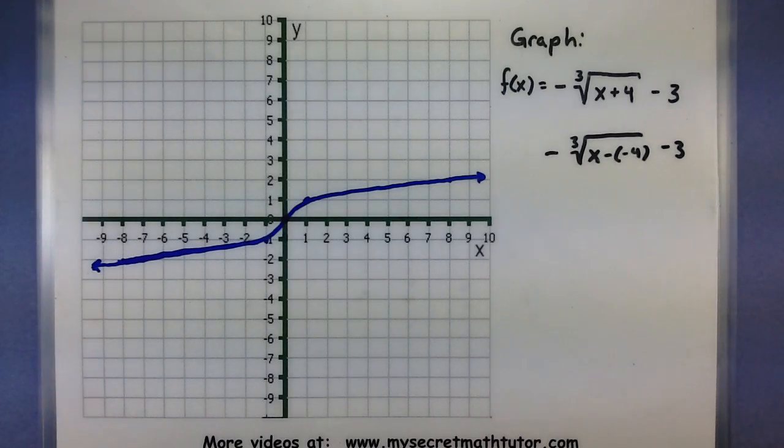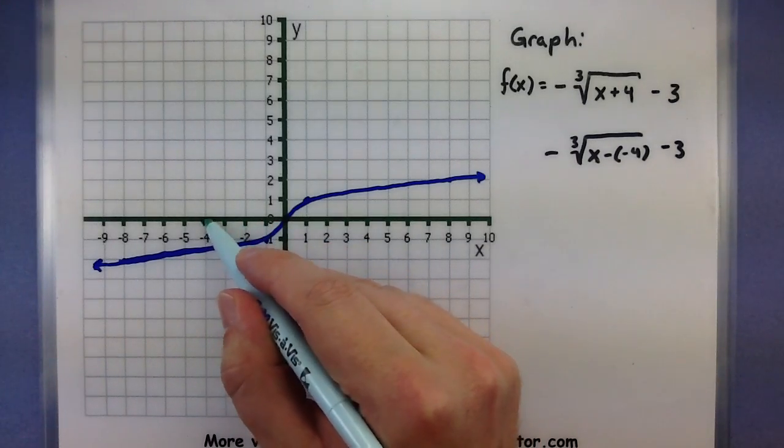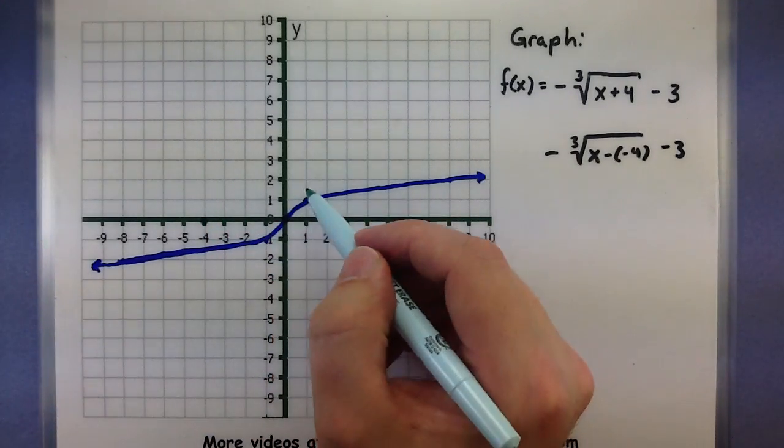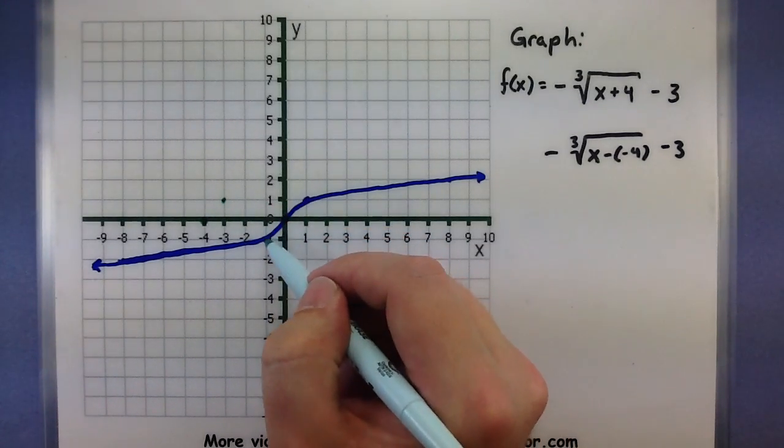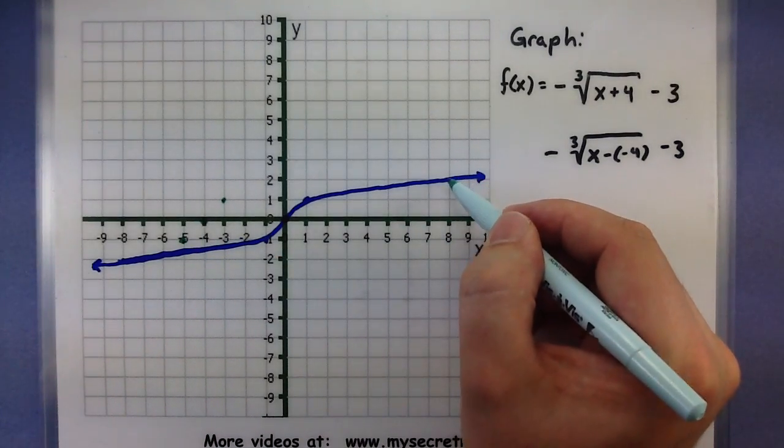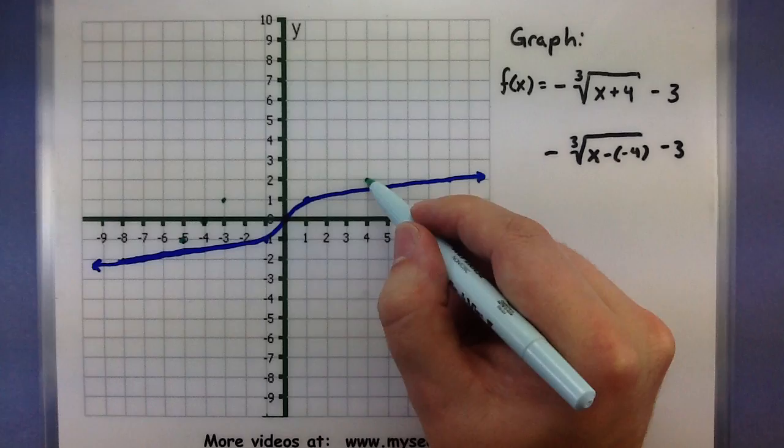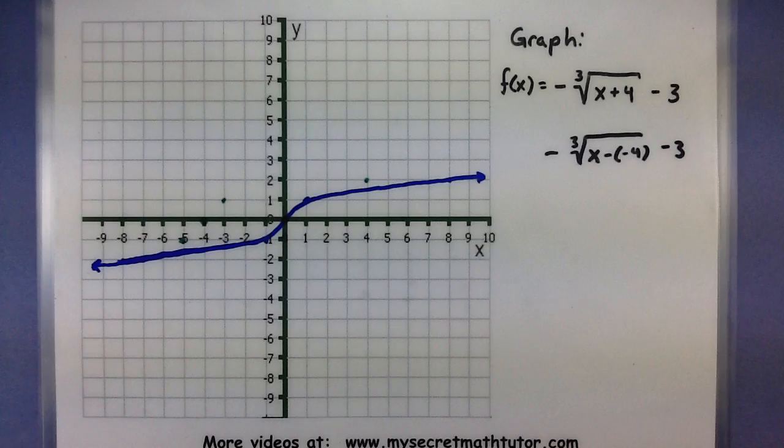So we are going to go left 4. So let's see, 1, 2, 3, 4. This will be like my new middle point. 1, 2, 3, 4. Let's see, 1, 2, 3, 4. And let's see, I had two other points out here. 1, 2, 3, 4. There's that one. This guy, 1, 2, 3, 4 and it's off my chart.